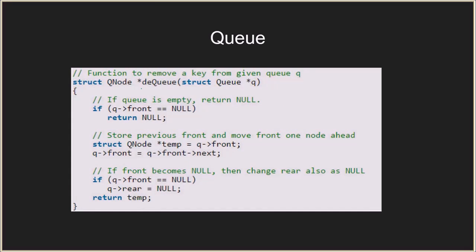Now the second important function is the dequeue (dq) operation. It takes only the queue and returns the dequeued node. First it checks if the queue is empty and returns null if so. Otherwise, it stores the front node in temp, then moves front to the next of the current front — since we dequeue from the front and enqueue from the rear.